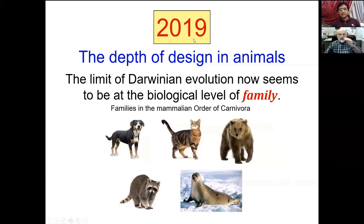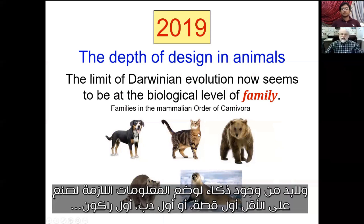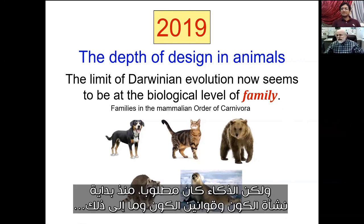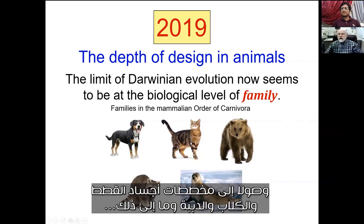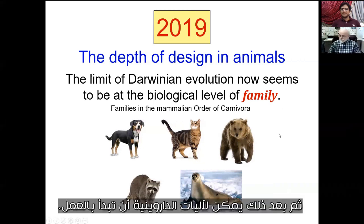Intelligence had to put all the information necessary to make at least one primordial cat or bear or raccoon, and then they could diversify from that. But intelligence is needed all the way from the beginning of the universe — the laws of the universe — all the way down to the plan for cats versus dogs and bears. After that, Darwin's mechanism can take over.